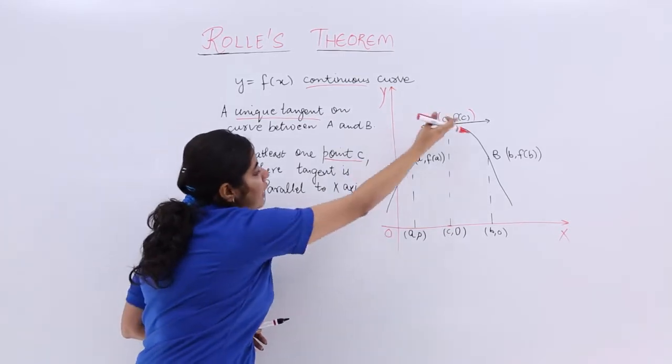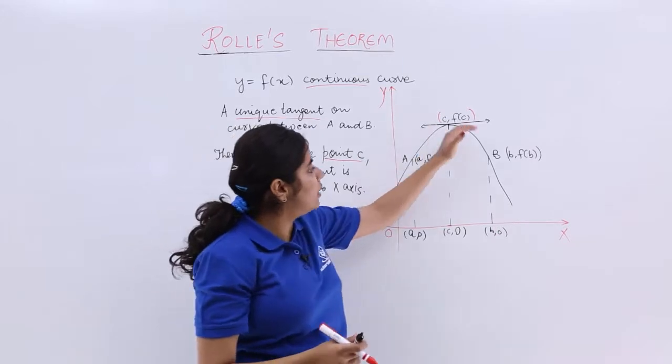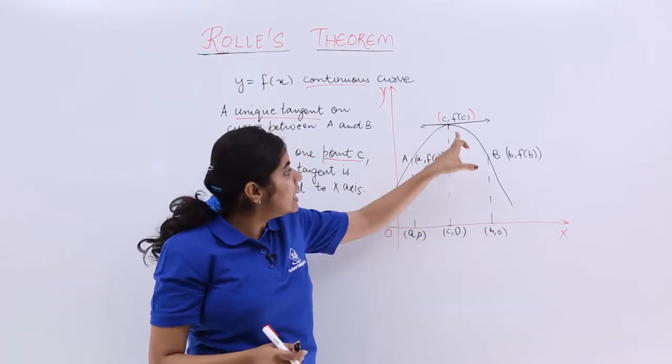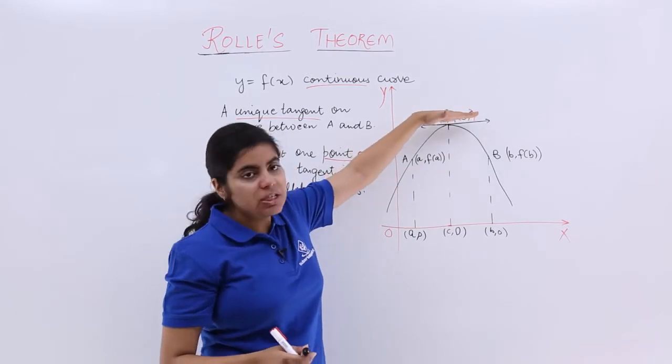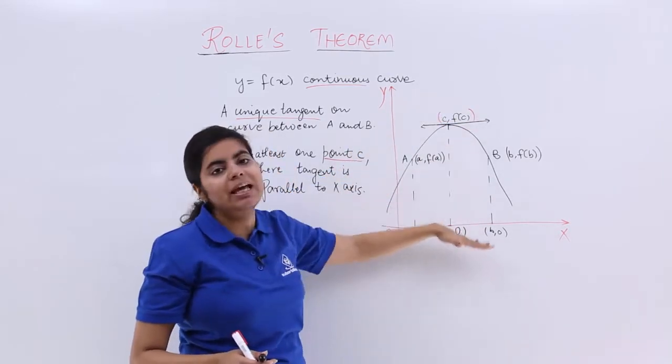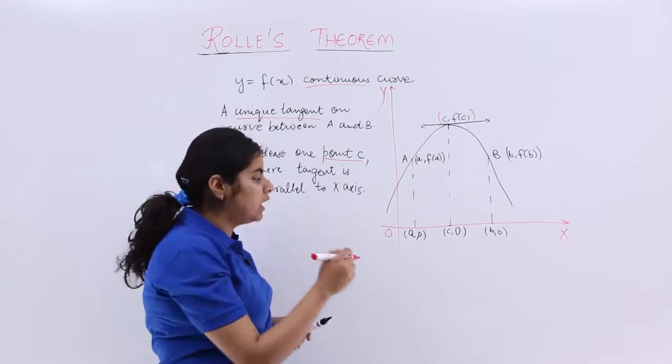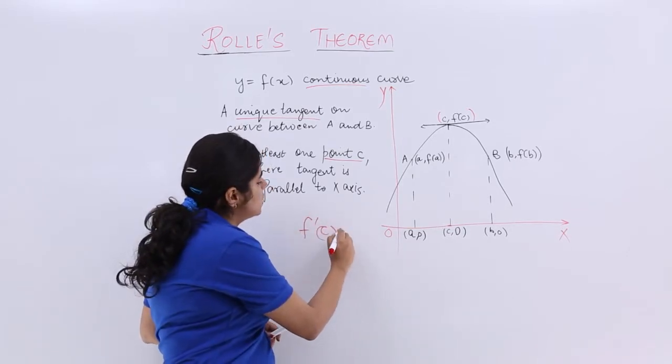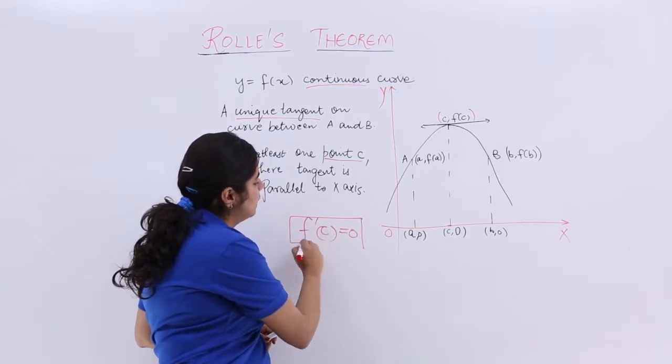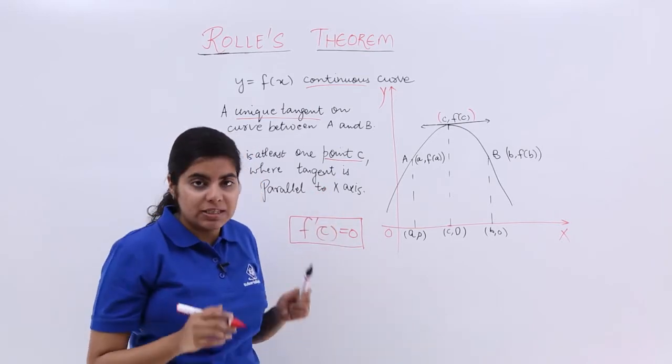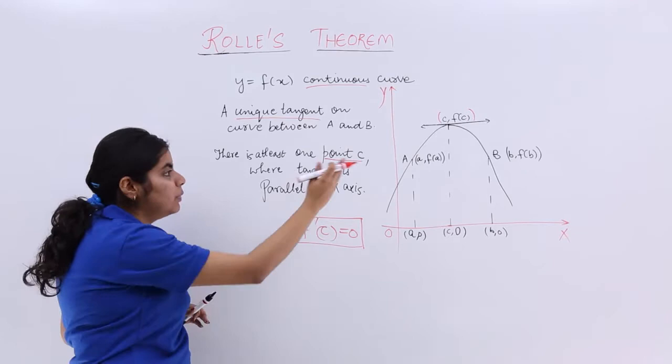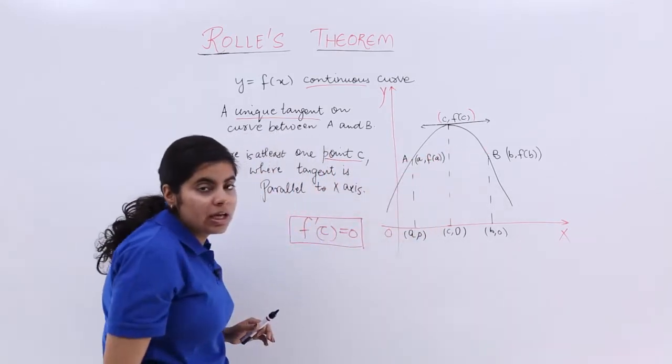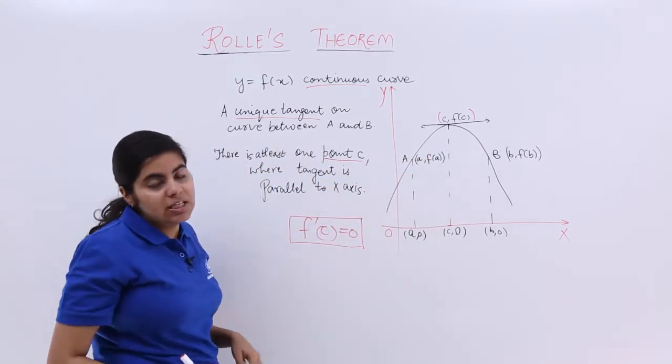Because if you have one curve, and there exists one point c wherein the tangent when drawn is parallel to the x-axis, that is the geometrical meaning of f'(c) equal to 0 that we started in the previous video. We started that there exists at least one point c, or a real number c, between a and b, wherein f'(c) is equal to 0.